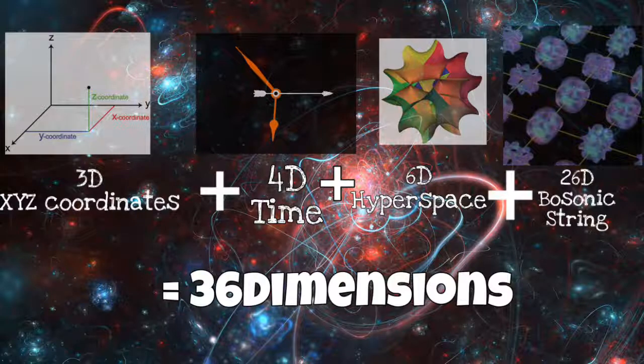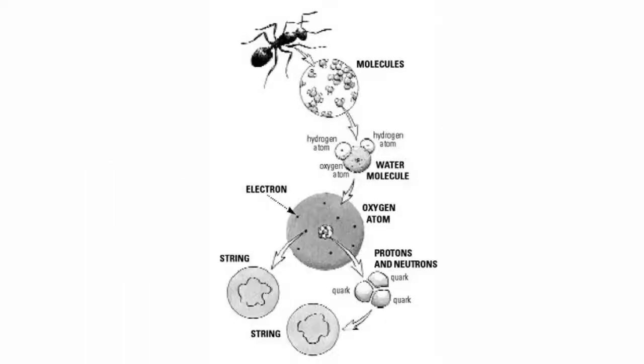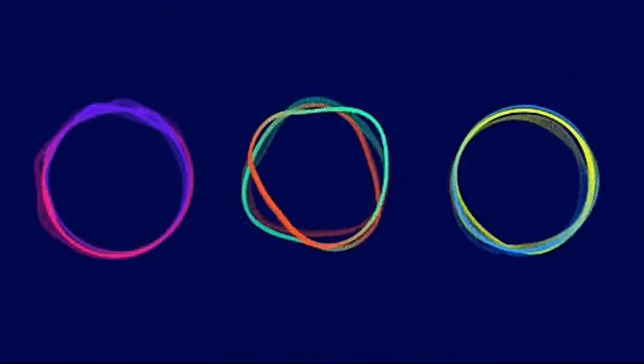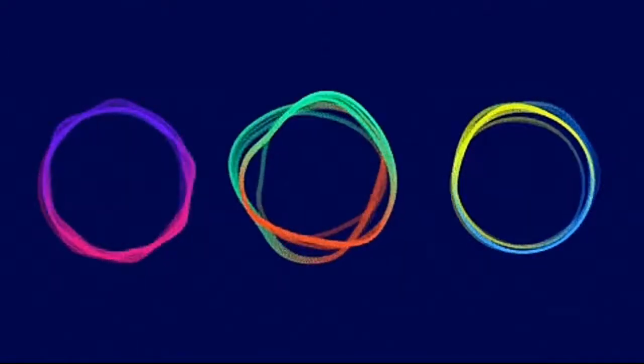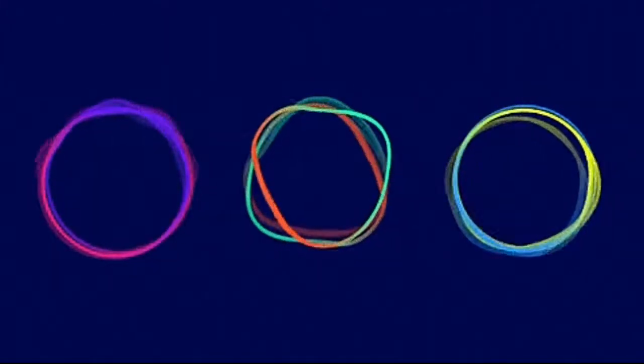Now here we derive the ten dimensions, and now we will derive the rest 26 dimensions and complete our 36 dimensional M theory. Now string theory is a member of M theory, so it states that all matter is made up of tiny little strings, and the mass and charge and spin is described by their vibrations. So we will not go into that detail.